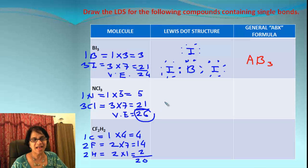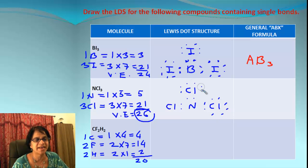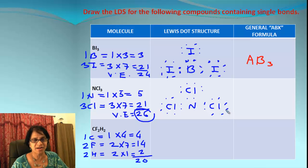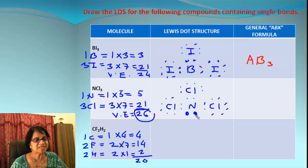For NCl₃, the total number of electrons is 26. Nitrogen is the central atom, and we are going to have three chlorines around it. First, we do the handshake — 2 electrons between each pair. Then we make sure the surrounding elements get 8 electrons each. We have 8, 8, and 8 around each chlorine — that comes to 24 electrons. We had 26 electrons and 24 are being used, which means there are still 2 electrons not used for bonding. These are the spare lone pair electrons on nitrogen.